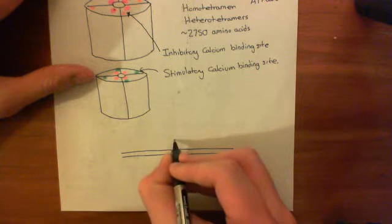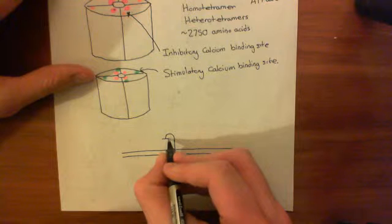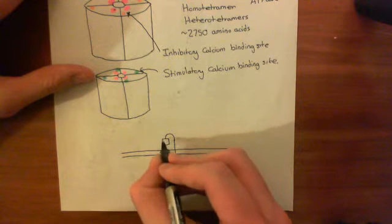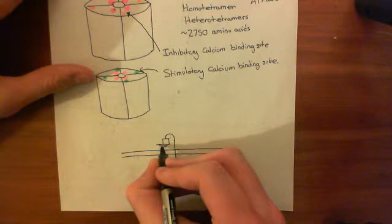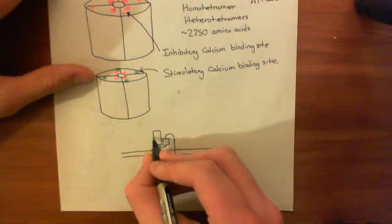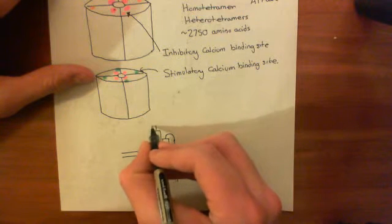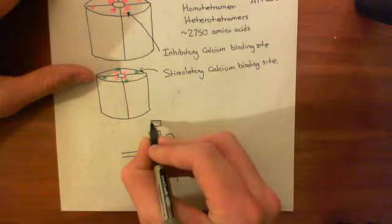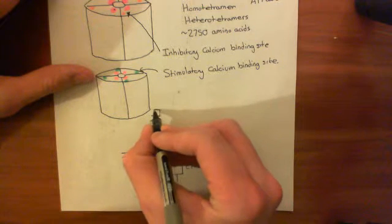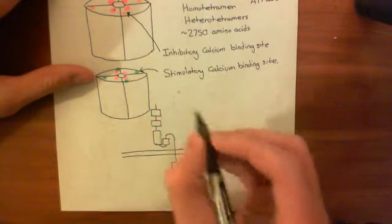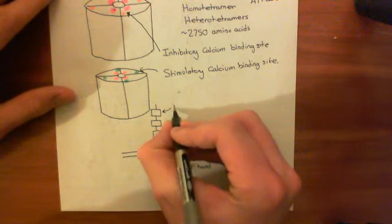Then STIM1 has a region known as the acidic region. And then it has another region known as the channel-activating domain, which is very important. Then it has another region which is negatively charged. And finally, it has a polybasic tail.